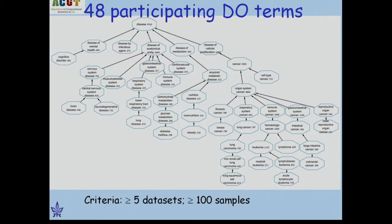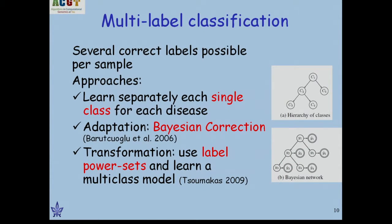In our dataset we covered 48 participating disease ontology terms. Cancer is a big part of this set — over 5,500 samples — but also some other diseases. The problem at hand is multi-label classification, in which the same sample could have multiple correct labels. There have been several approaches: learning separately each single class, applying a Bayesian correction, or forming a power set of the labels and applying a multi-class model.